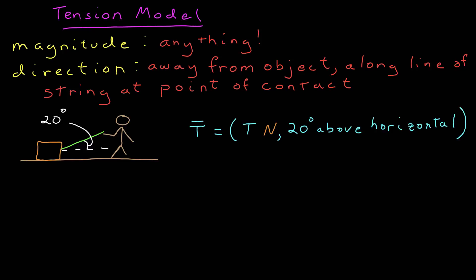For example, if someone is pulling the string, the string is 20 degrees above the horizontal, I would say that the tension force on the mass, in this case, would have some magnitude T, I don't know what it is, in units of newtons, and the direction would be 20 degrees above the horizontal.